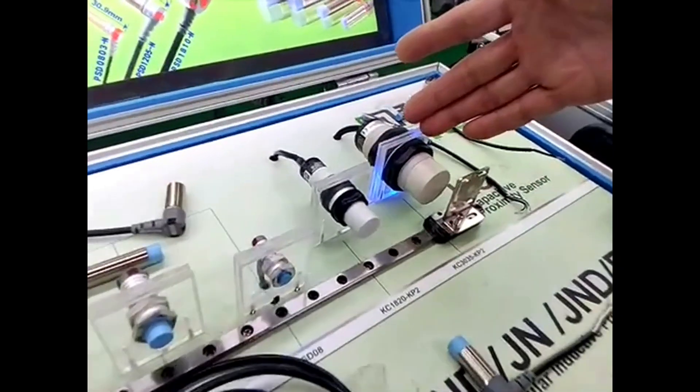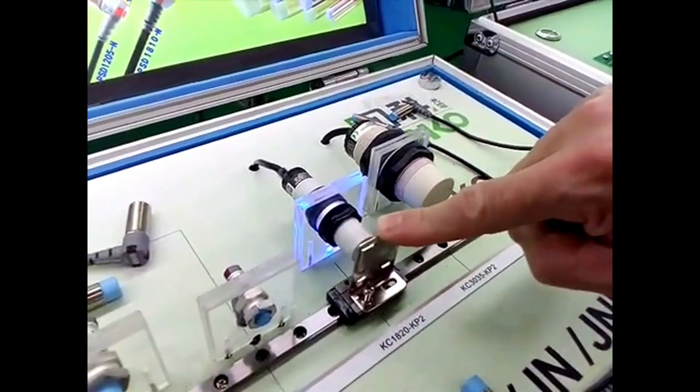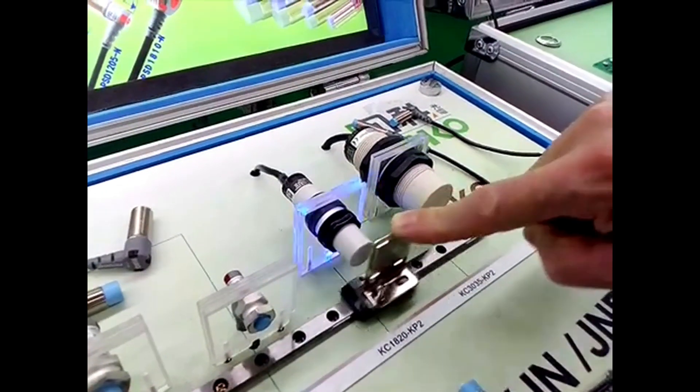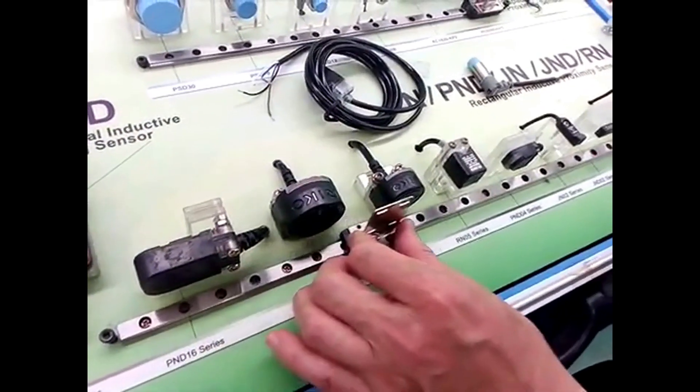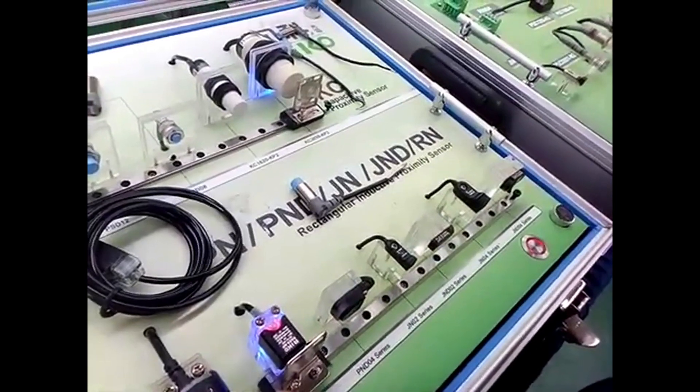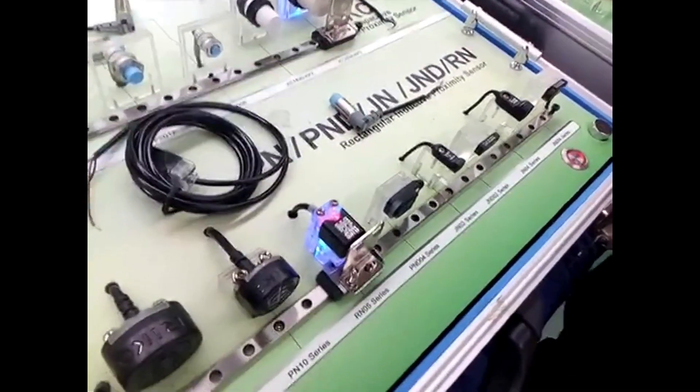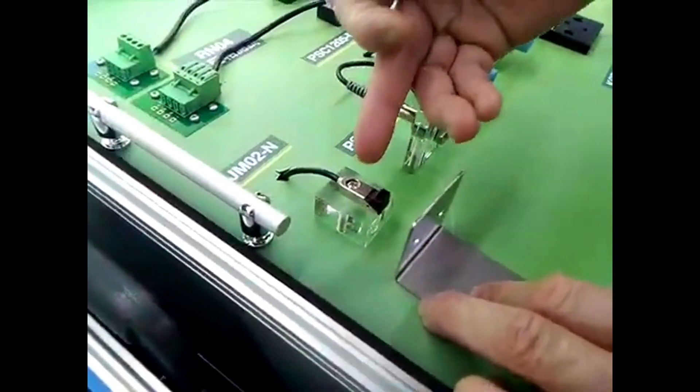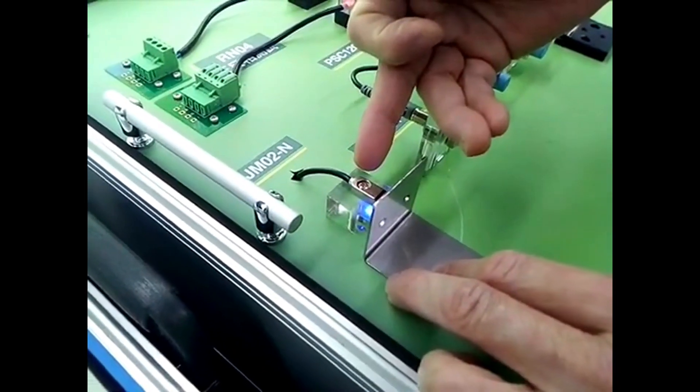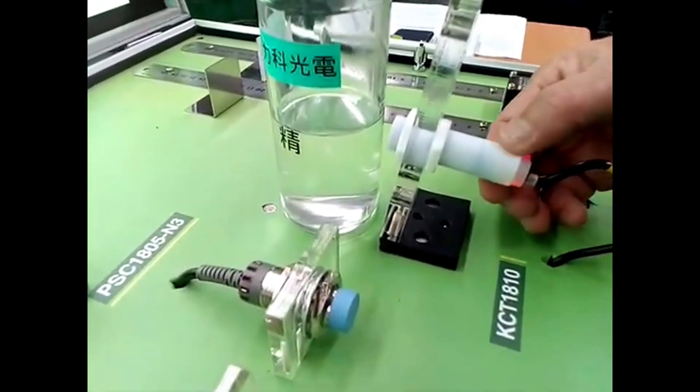This is capacitive sensor M18, M30, also four in one output. This is traditional type proximity sensor for different applications, but most of them plastic housing. In the new design we have metal casing proximity sensor. For capacitive sensor we have designed Teflon housing for chemical use.